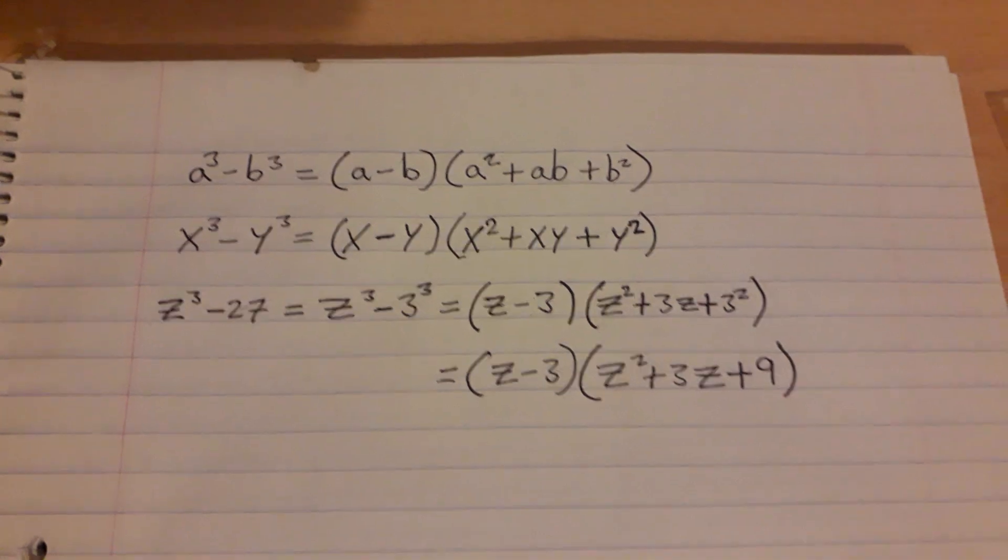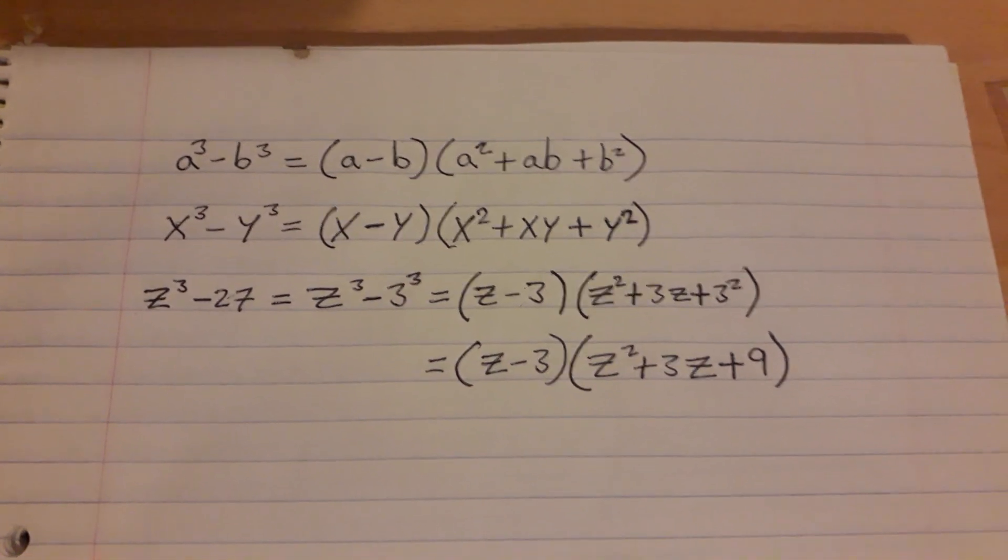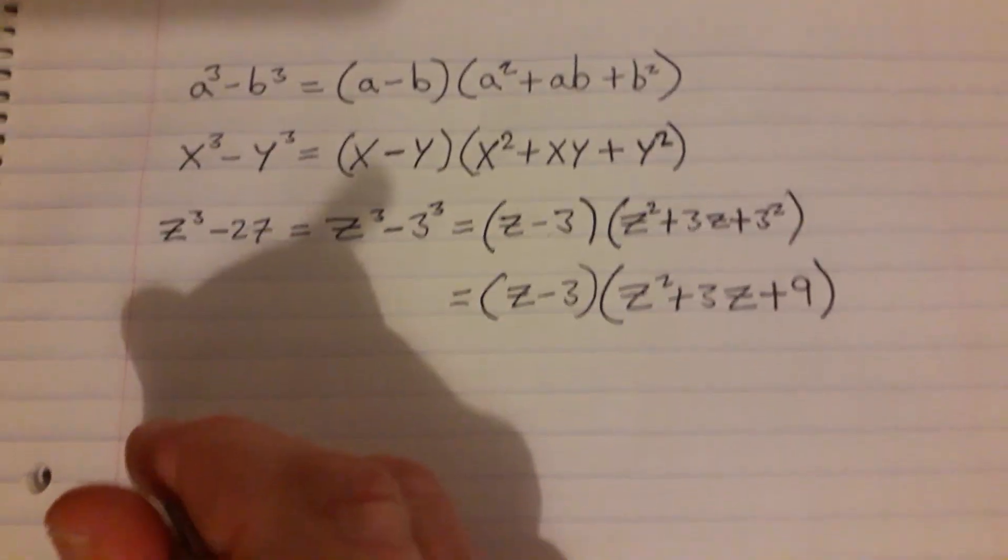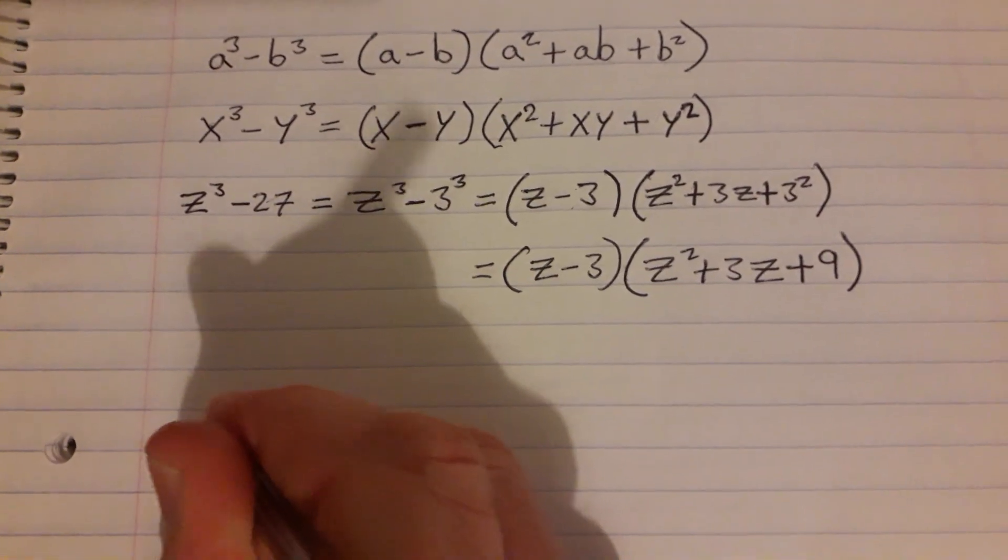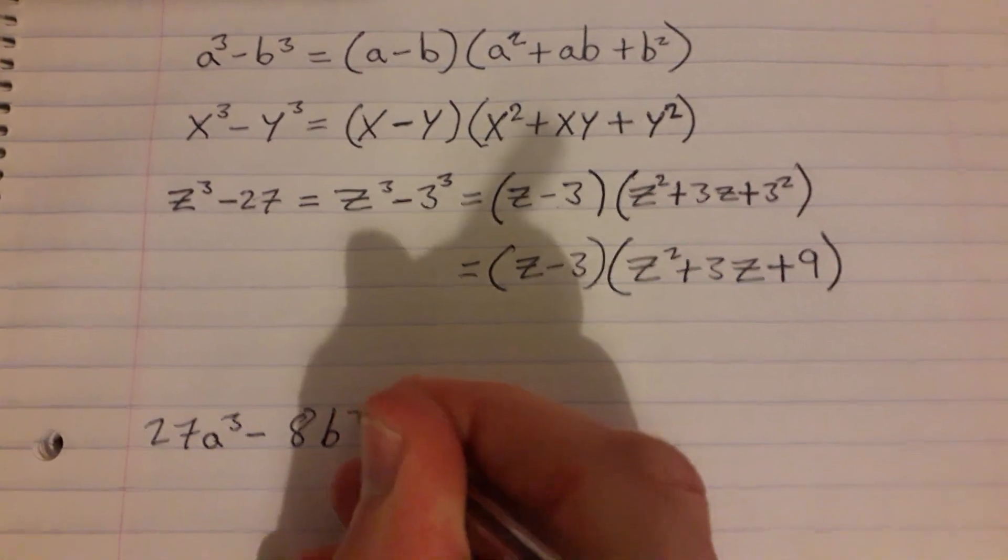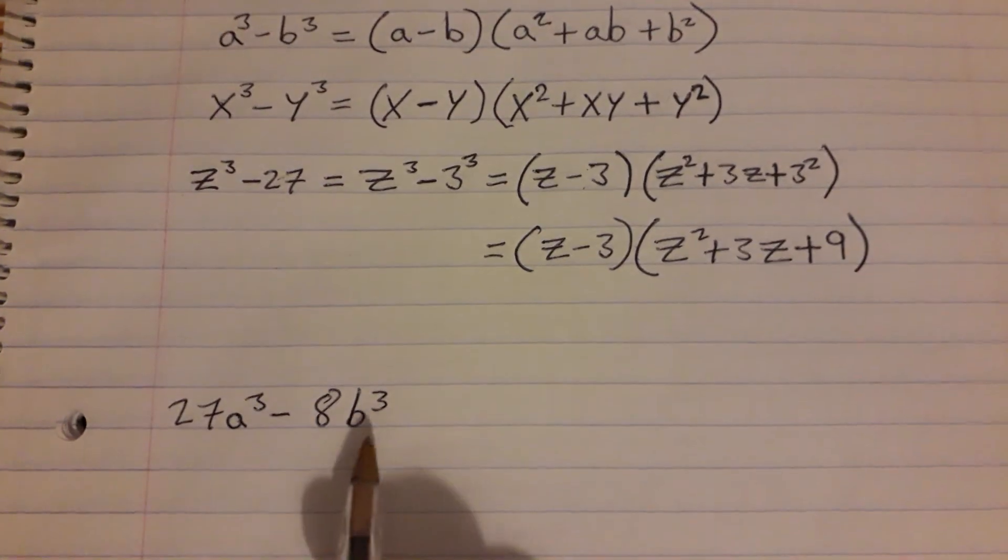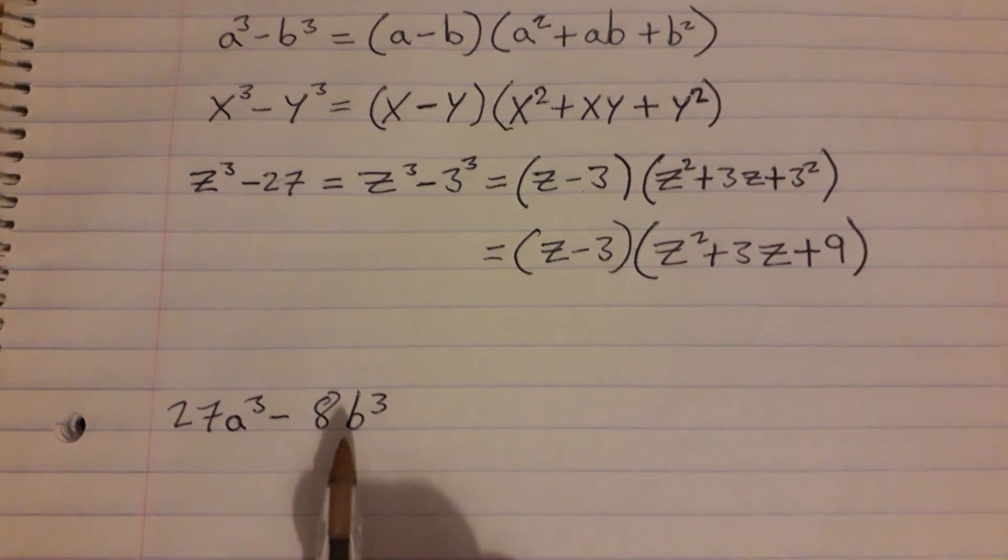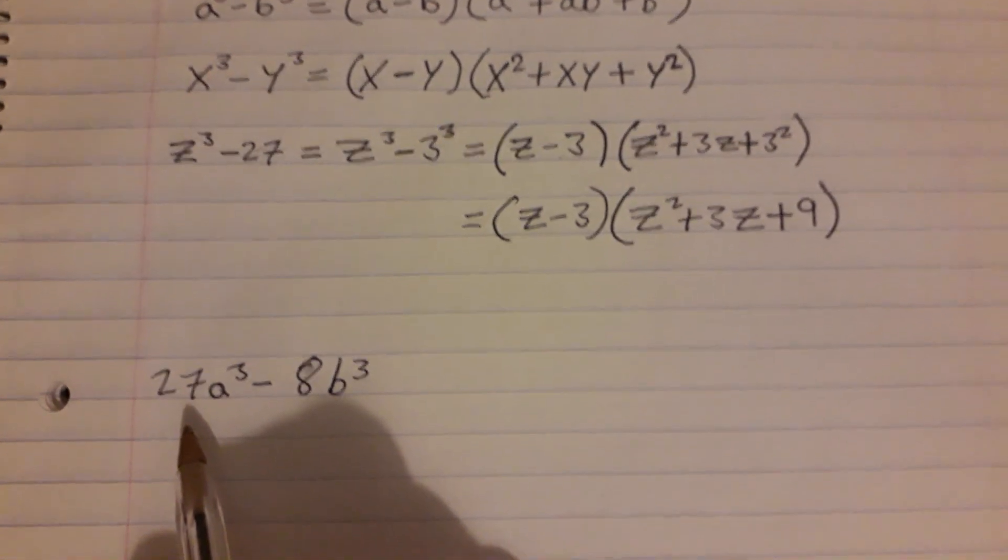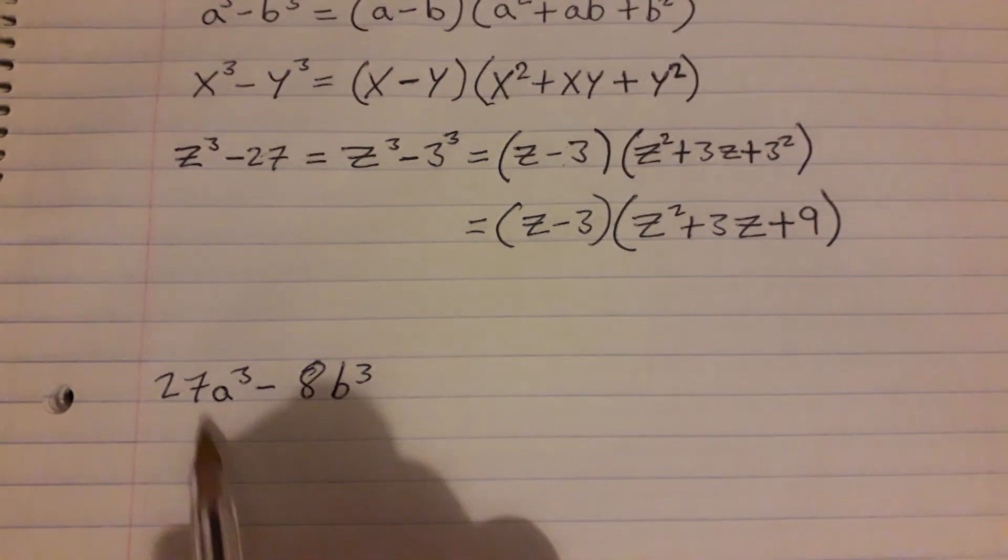When we have something that looks like this, we've seen stuff like this before when it comes to the difference of two squares, and so it's a similar strategy or tactic that we'll use to factorize something like this.